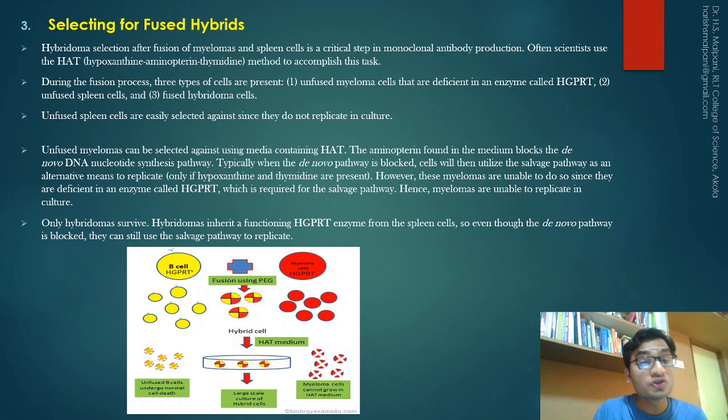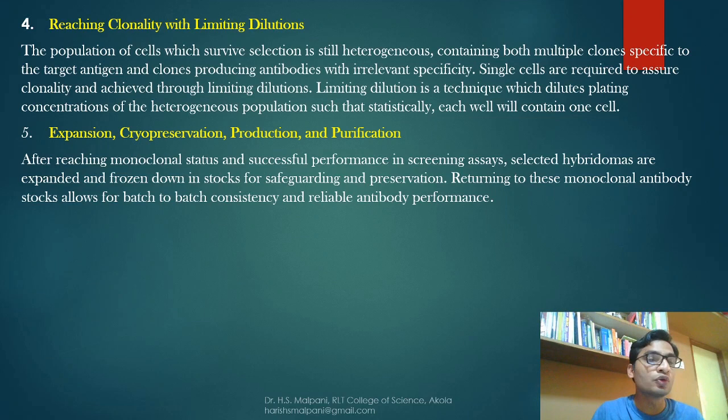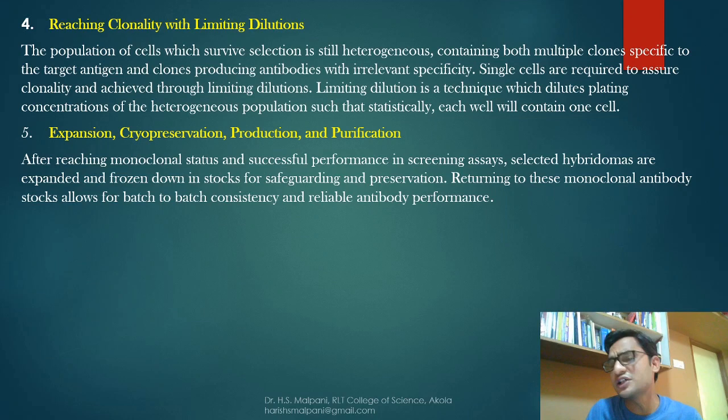Step four is reaching clonality with limiting dilutions. The population of cells that survive HAT selection is still heterogeneous, containing multiple clones specific to the target antigen and clones producing antibodies with irrelevant specificity. Single cells are required to assure clonality, and this is achieved through serial limiting dilutions.